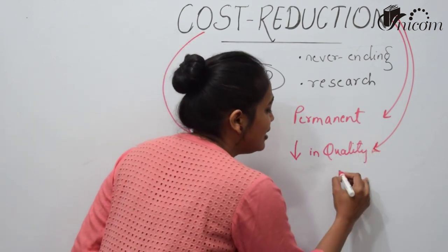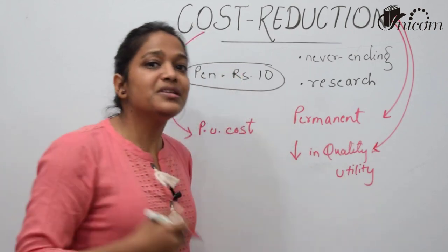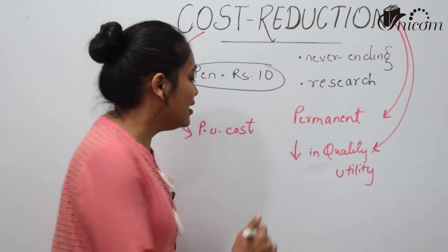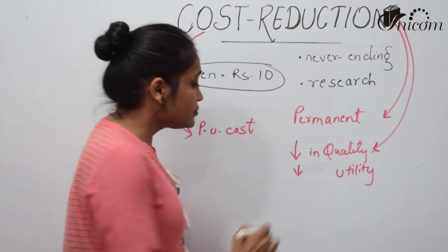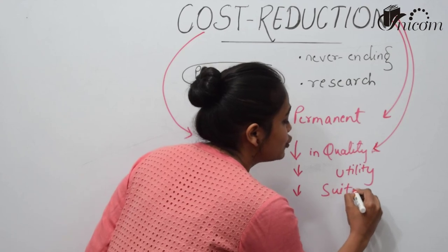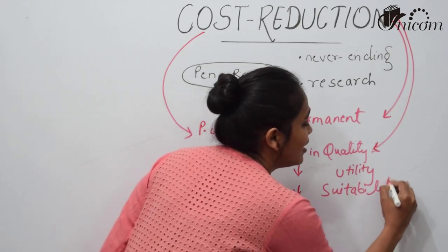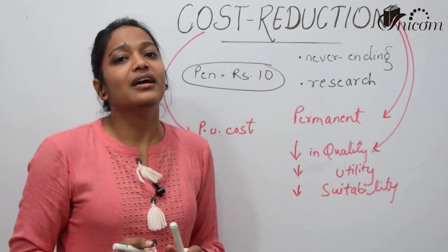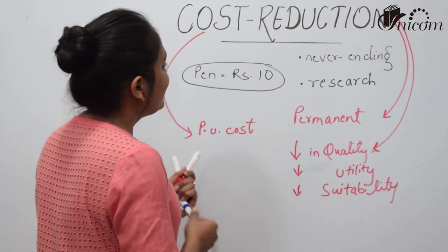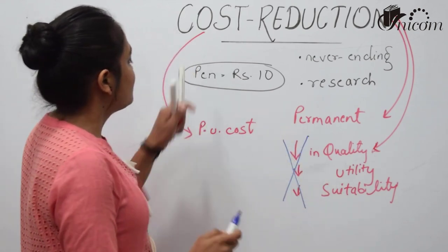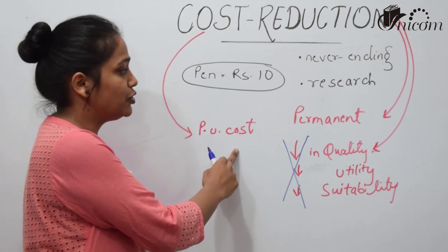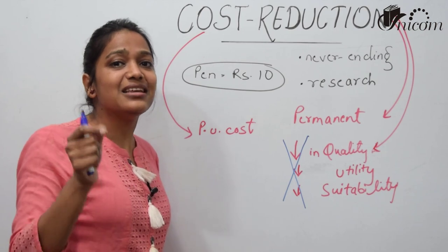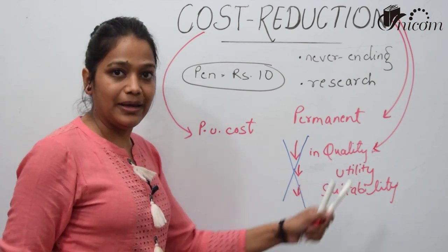The utility of the article — its purpose — should not be diminished. The suitability of the article should not change. So the three key features of cost reduction are: first, there must be a per-unit reduction in cost; second, the reduction has to be permanent; and third, this reduction should not lead to any decrease or loss in quality.